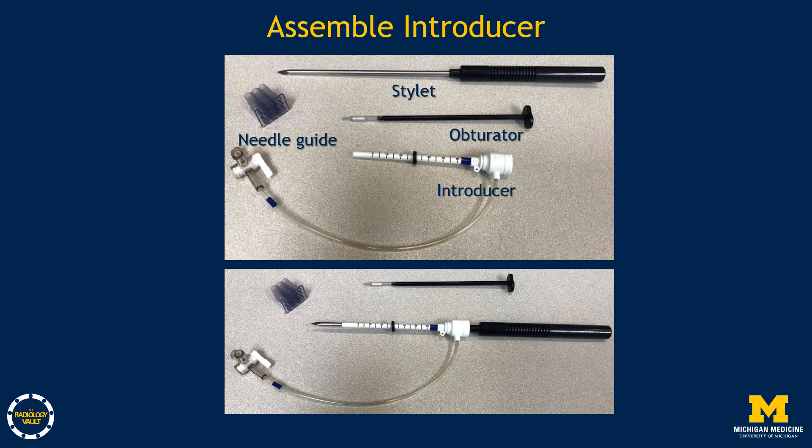After the target has been localized, assemble the introducer. The introducer kit includes a plastic introducer, a sharps dilette, a plastic obturator, and a needle guide. Place the sharps dilette flush within the introducer. There is a black stopper on the outside of the introducer; slide that to the measured depth from the axial image. The needle guide sits in the targeted grid box and holds the introducer in place. The introducer is hollow and will accommodate the vacuum-assisted biopsy device when it is time to sample.